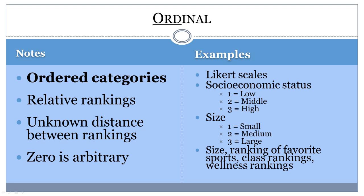Ordinal data is also considered categorical. The difference between nominal and ordinal data is that the categories have a natural order to them. You can remember that because ordinal sounds like order. Numbers are assigned to categories, but they are arbitrary — they are simply used to establish a ranking and there is no absolute zero.